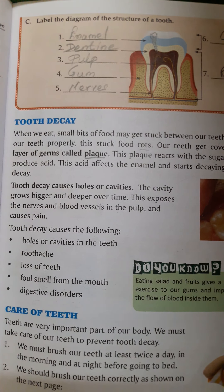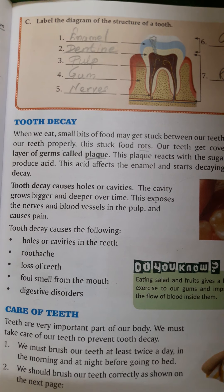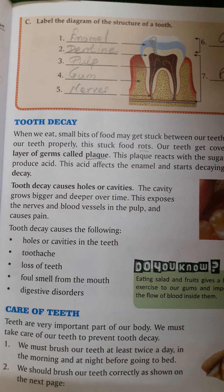Good morning, class 4. Last class we learned about the structure of the tooth. We saw that teeth are divided into two parts: the part above the gum is known as the crown and the part inside the gum is known as the root. Further, it is divided into enamel, dentine, pulp, and nerves. After that, we learned how a tooth gets decayed.